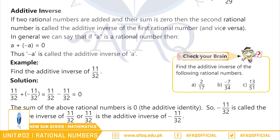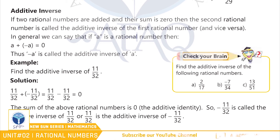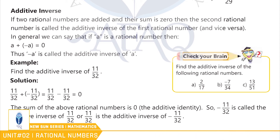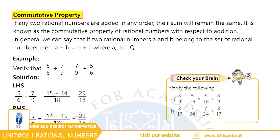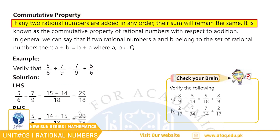اور دوسرا rational number پہلے rational number کا additive inverse ہوگا۔ Commutative Property: بچو کوئی بھی rational numbers کسی بھی order میں جمع کریں تو جواب same ہی آئے گا۔